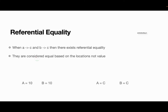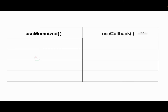In useCallback we cache the entire function and every time we use the same function, we are making use of this referential equality concept. Whenever there is any change, referential equality no longer exists. useCallback provides referential equality between renders to maintain the cache of the function. Now let's look at the basic differences between useMemoize and useCallback.